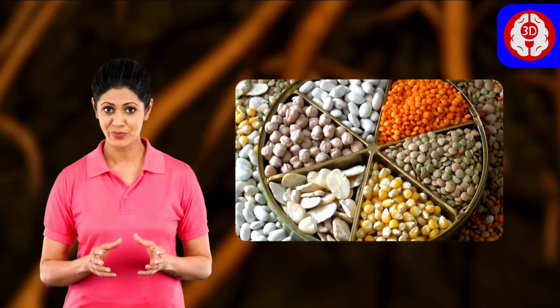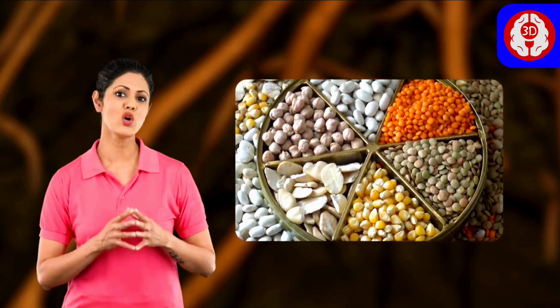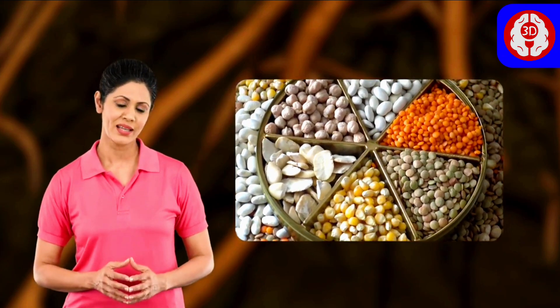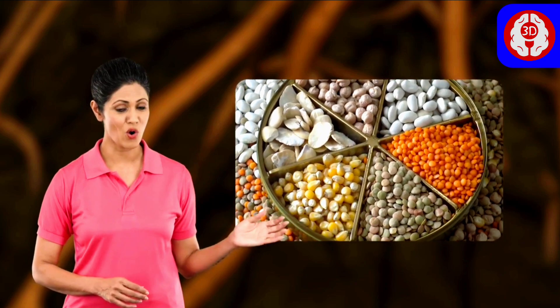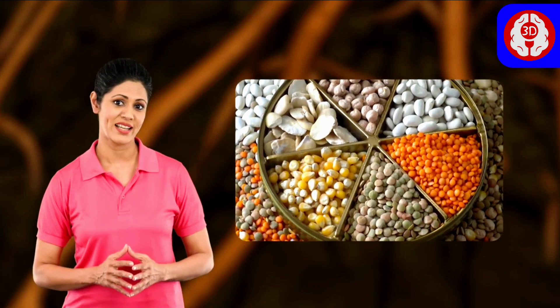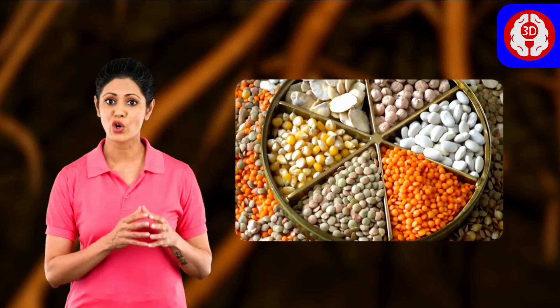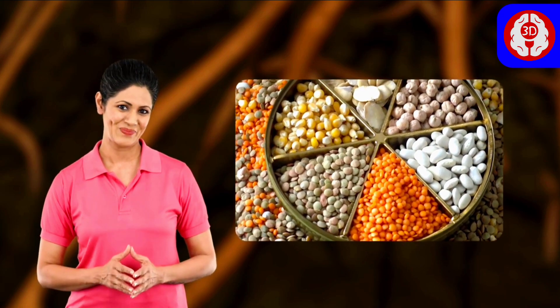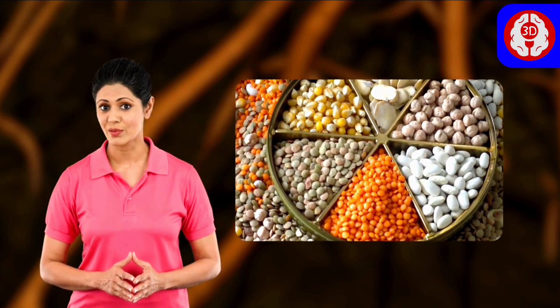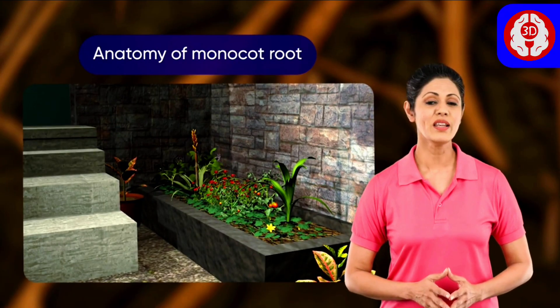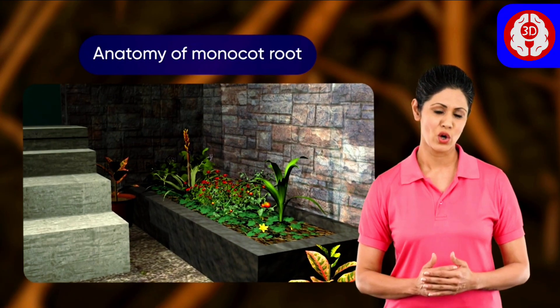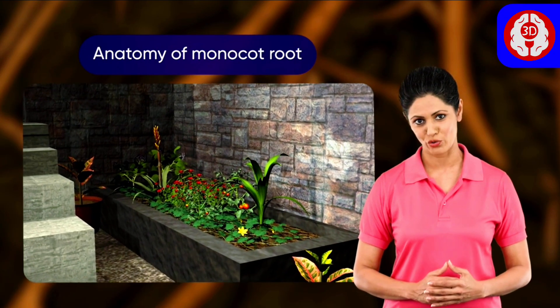Depending on the nature of the embryo of the seed of a plant, it can be classified as Monocotyledonous or Dicotyledonous. One cotyledon implies a monocot plant such as lilies. In this topic, we will learn the detailed anatomy of a monocot root.